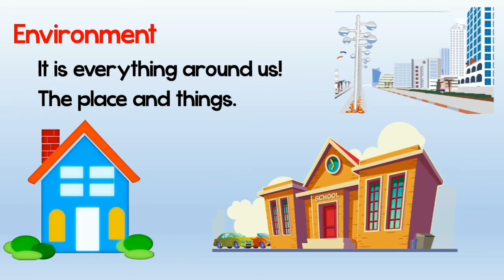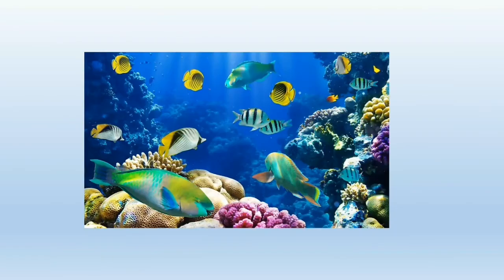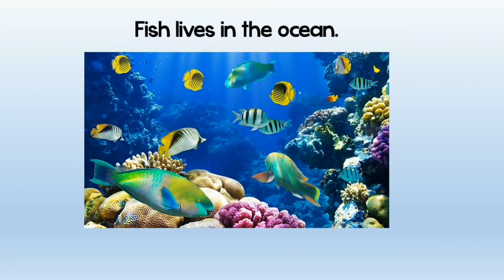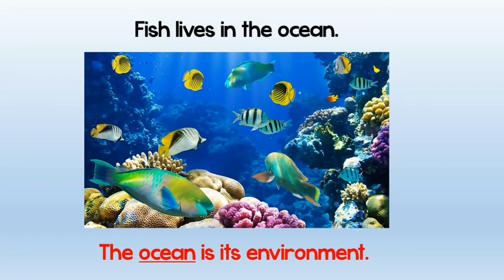Every environment has different things in it. Now, even animals have their own environments. Look at this example — a fish lives in the ocean, so the environment it is in is the ocean.